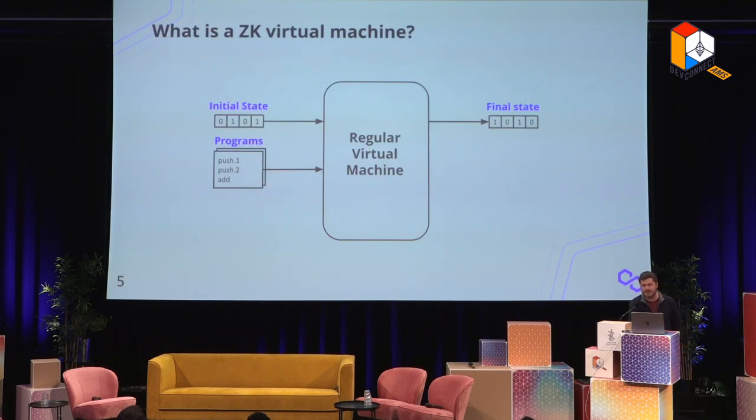Let's talk about what a ZK virtual machine is. It's kind of like a regular virtual machine — a simplified diagram, but basically what a virtual machine does is it takes some initial state, applies some programs, executes those programs against the initial state, and you get some final state at the end.